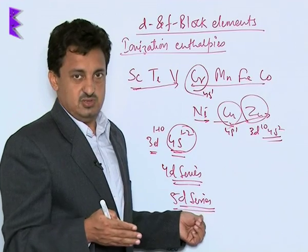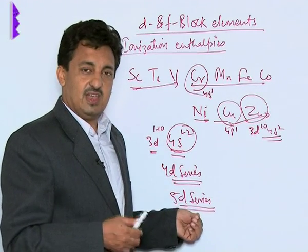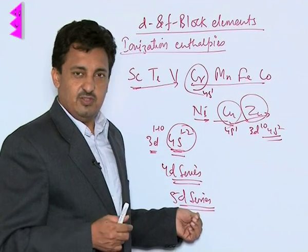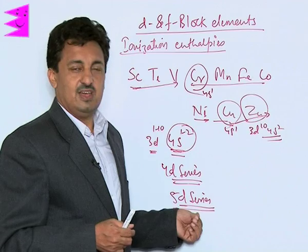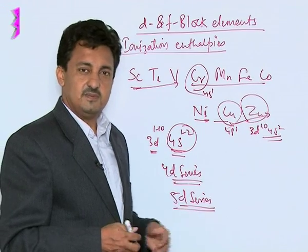Because of this, the 5d electrons are under the direct influence of the nucleus, and therefore the ionization enthalpies of the 5d series elements are high.